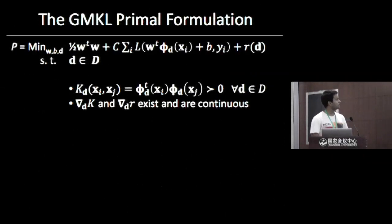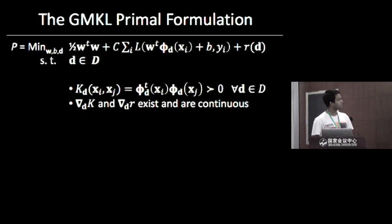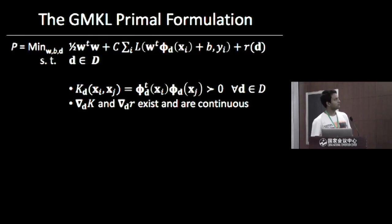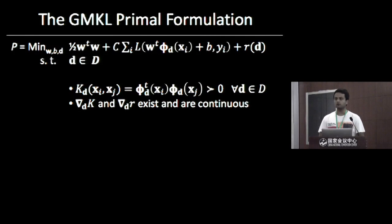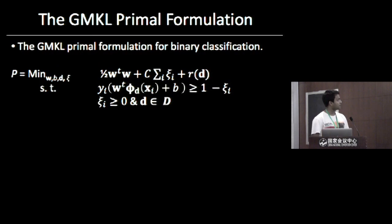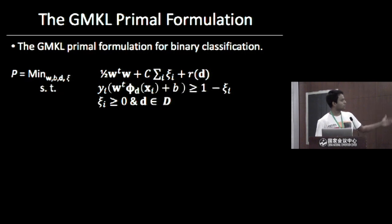Shown is the generalized multiple kernel learning primal formulation. I call it generalized because it doesn't assume anything about the loss function, the way we combine base kernels, or the kind of regularization used. The RD term on the rightmost side is the regularizer, the kernel information is embedded in the Phi D term, and capital L is the loss function. If we replace the loss function by a binary hinge loss, we get the formulation for binary classification.